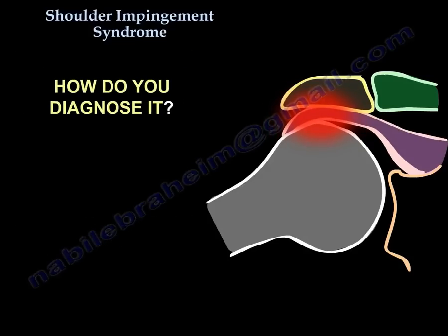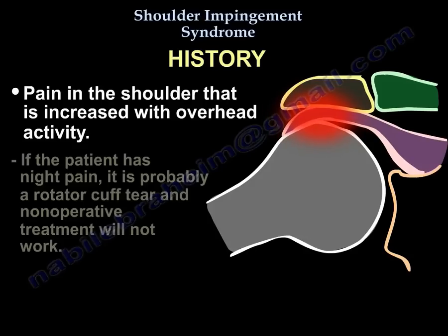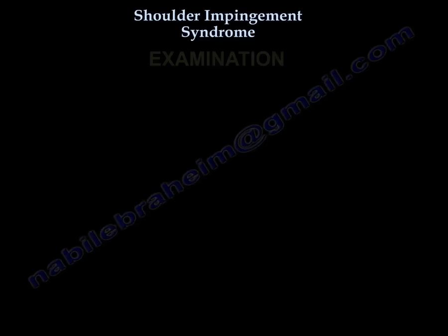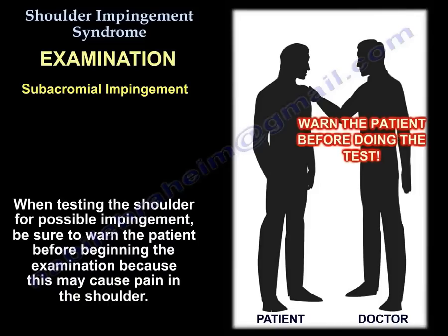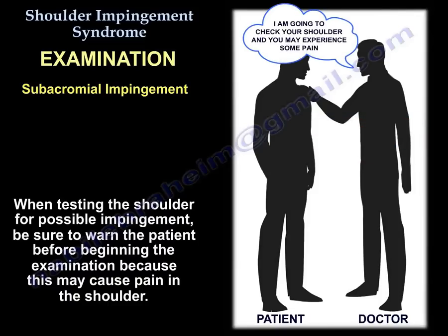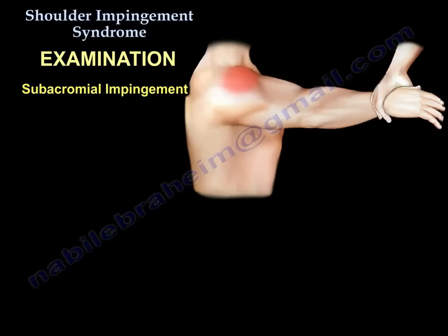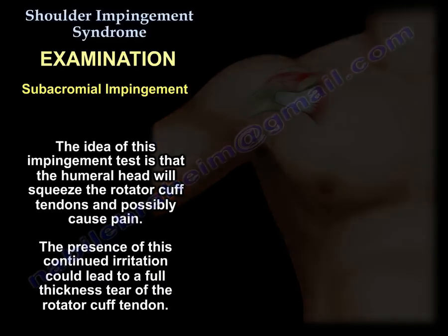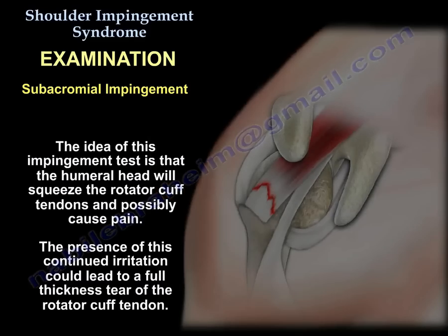How do you diagnose it? You start with the history. Pain in the shoulder that is increased by overhead activity. If the patient has night pain, probably non-operative treatment would not work — it's probably a cuff tear. We then examine the patient and move the arm, so you need to warn the patient because they may get pain. These are called impingement tests — the idea is that the head of the humerus will rise up and squeeze the tendons, causing pain and stopping the arm from lifting. Keep in mind, these tendons can progress to a full thickness cuff tear with continuation of the irritation.